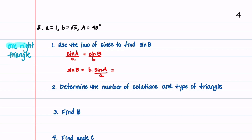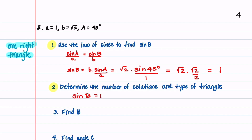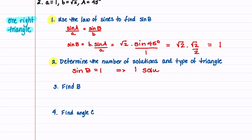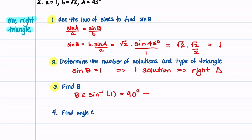Our second example is where we'll get one right triangle. We start by using the law of sines to find the sine of angle B. B is equal to root 2, and we have the sine of 45 degrees divided by A, which is 1. This gives us root 2 times sine of 45 degrees, which is root 2 over 2, giving a value of 1. Since sine B equals 1, we have one solution, and it's a right triangle. Finding angle B: B is the inverse sine of 1, which is 90 degrees — confirming it's a right triangle.